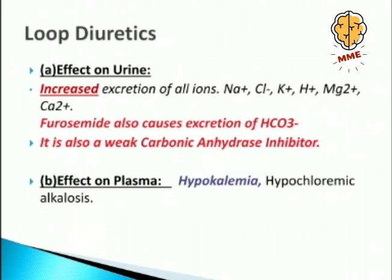Effect on plasma: loop diuretics cause hypokalemia — decreased potassium concentration in blood — because they increase excretion of potassium in the urine. They also cause hypochloremic alkalosis: increased excretion of chloride ions leads to electrolyte imbalance, giving rise to alkalosis.